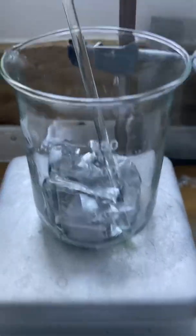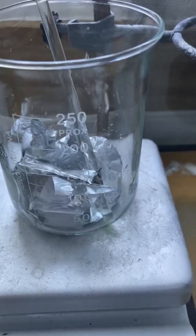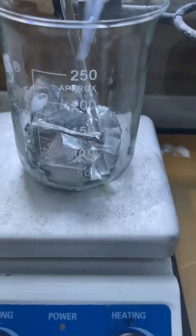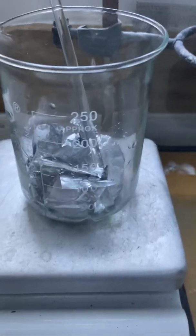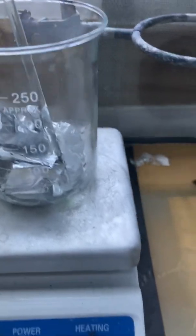Howdy folks! In this beaker I have some aluminum foil. I'm now going to add some hydrochloric acid to it and the reaction should proceed. That forms aluminum trichloride and hydrogen gas.